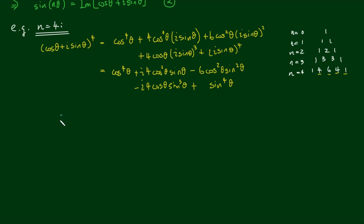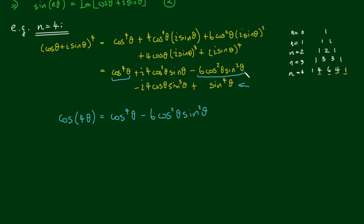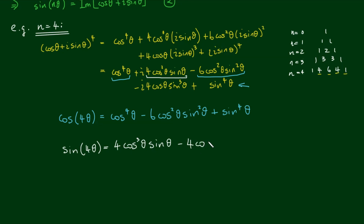To find cos(4θ), collect the real components of the binomial expansion: cos(4θ) = cos⁴θ − 6cos²θ·sin²θ + sin⁴θ. To find sin(4θ), collect the imaginary terms: sin(4θ) = 4cos³θ·sinθ − 4cosθ·sin³θ.